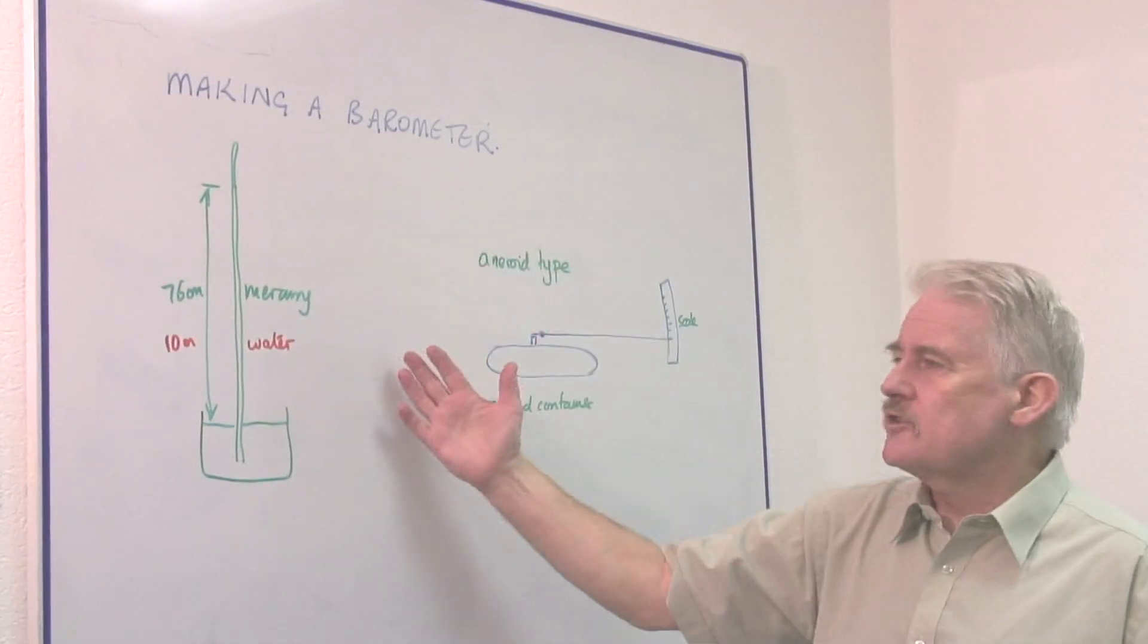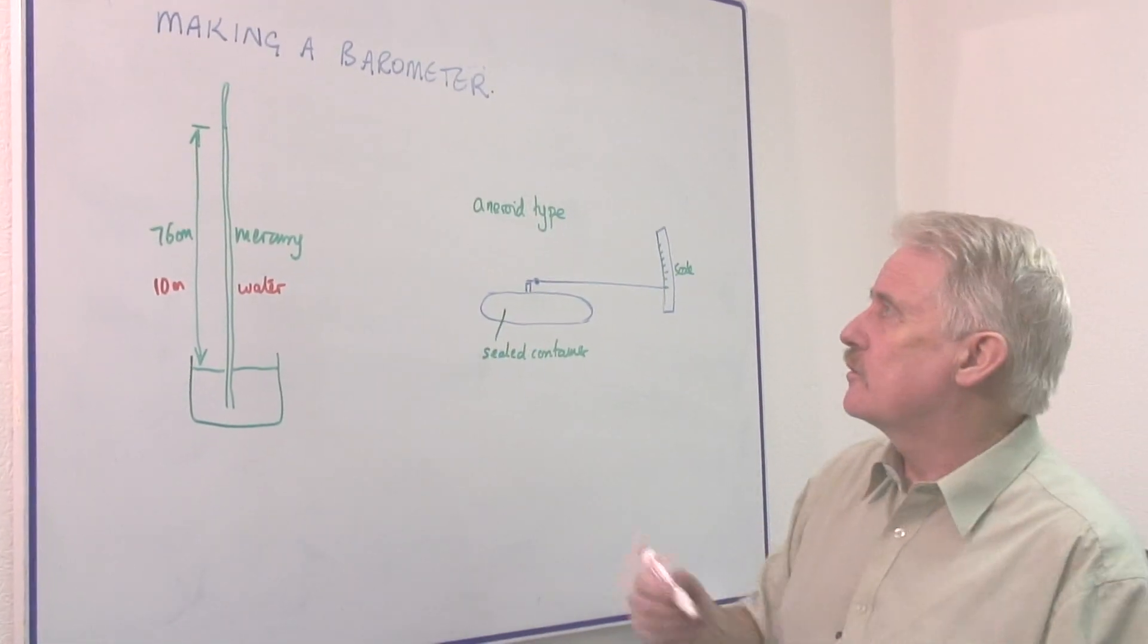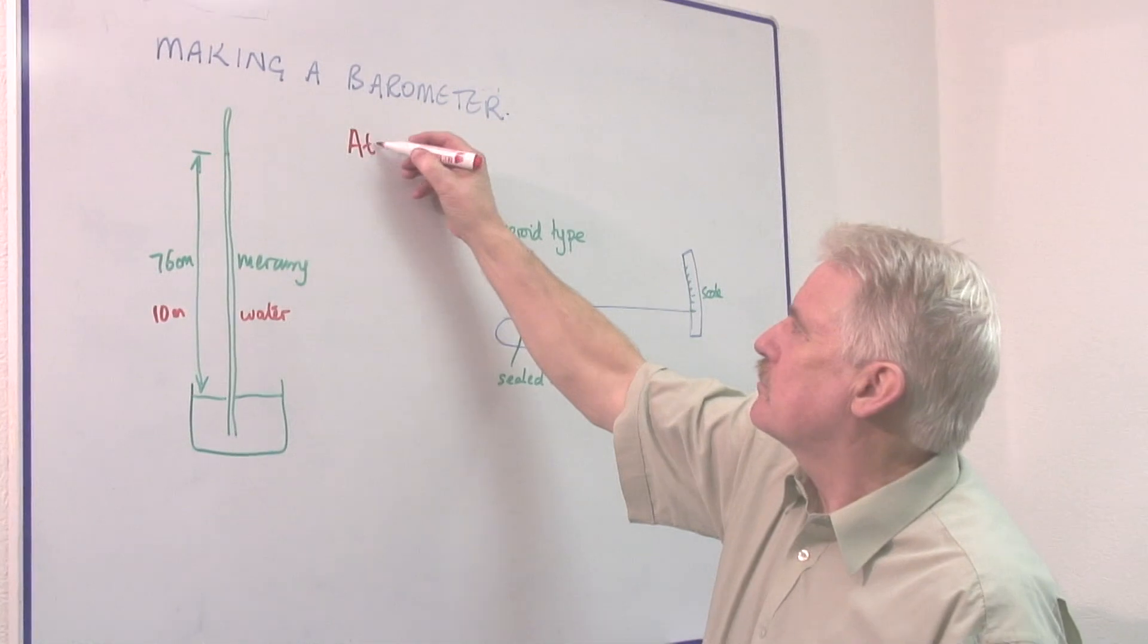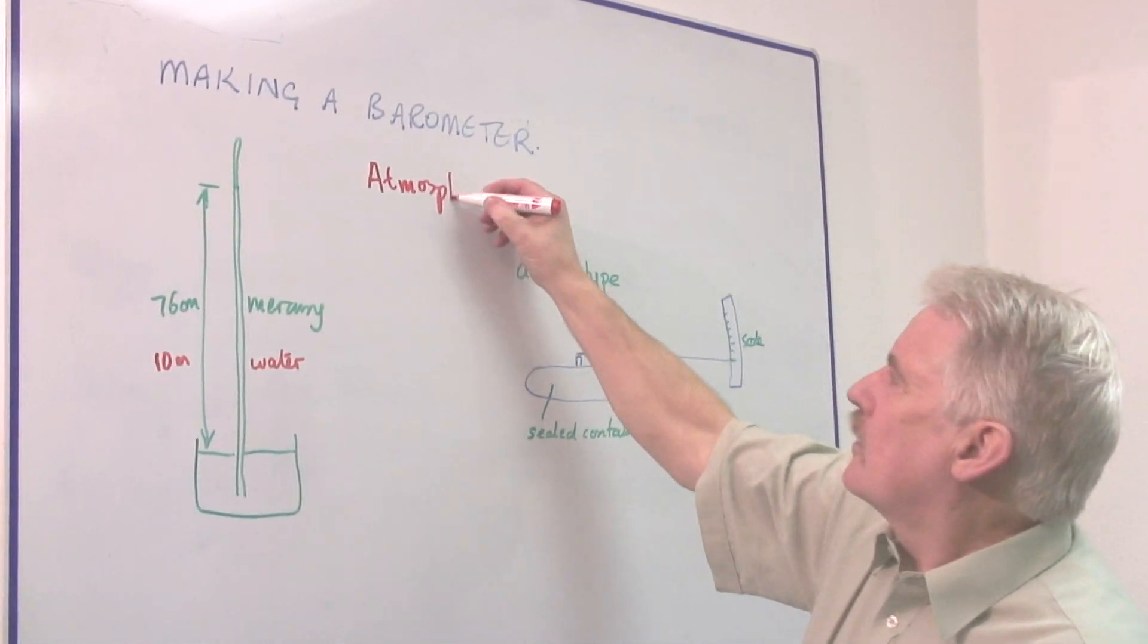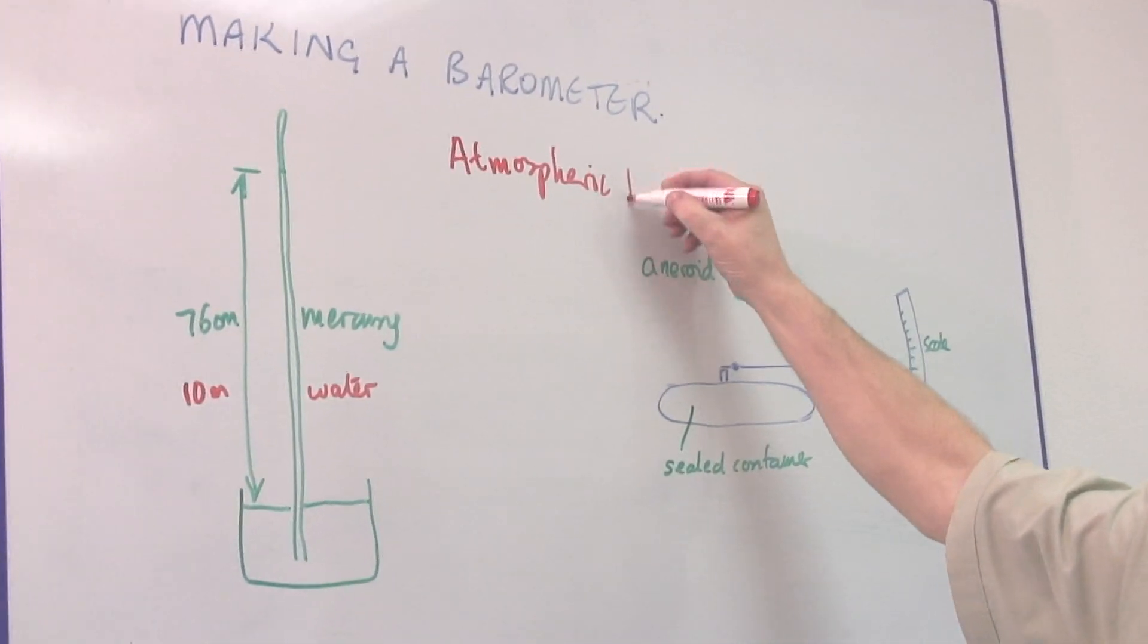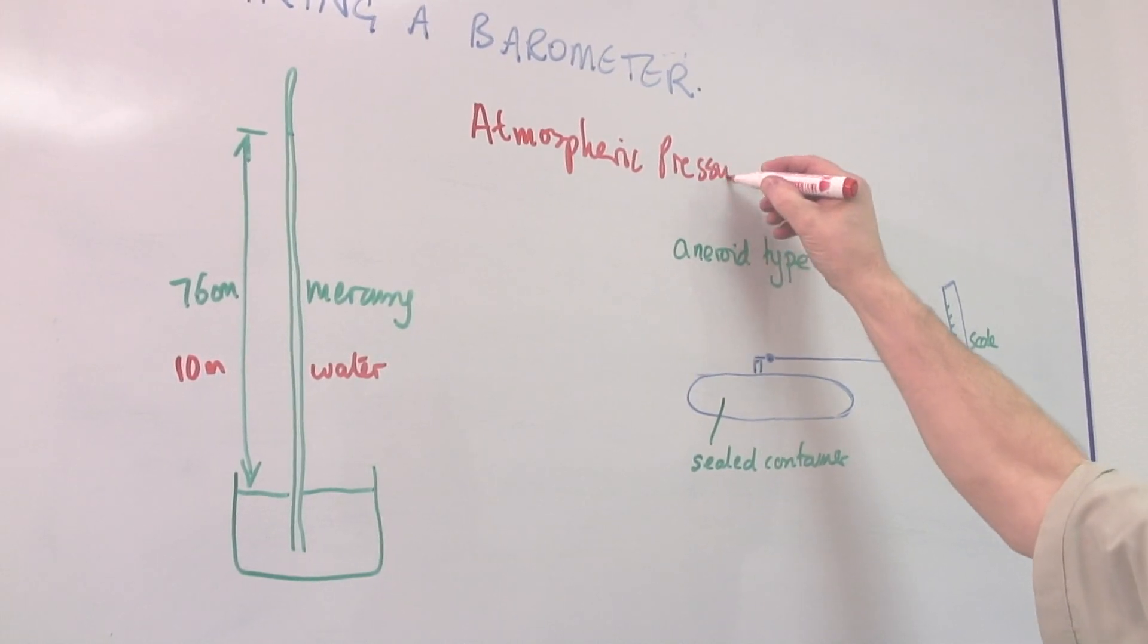A barometer is something that measures atmospheric pressure, so we're only measuring atmospheric pressure. And to measure atmospheric pressure, there are basically two different types of device.